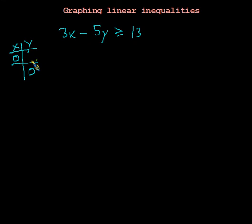So let's start off with setting x to 0, and when we do, if x is 0, this goes away, and we get y equals negative 13 fifths. So negative 13 fifths. And then if we set y equal to 0, then we get x equals 13 thirds.